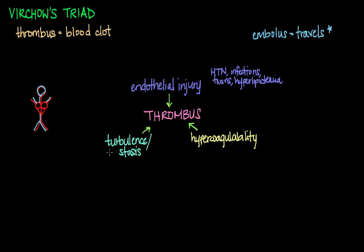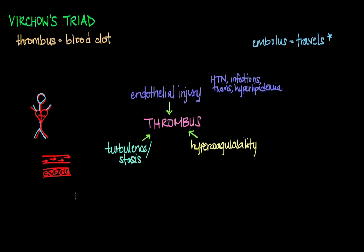Turbulence is a term for abnormal flow of a fluid — in this case, blood. If normal blood flow is smooth and organized, or laminar, then turbulent blood flow looks more disorganized, with little pockets of swirling blood that have chaotic movement. Turbulent blood flow can not only be caused by endothelial injury, but it can also lead to further endothelial injury — kind of like a catch-22.